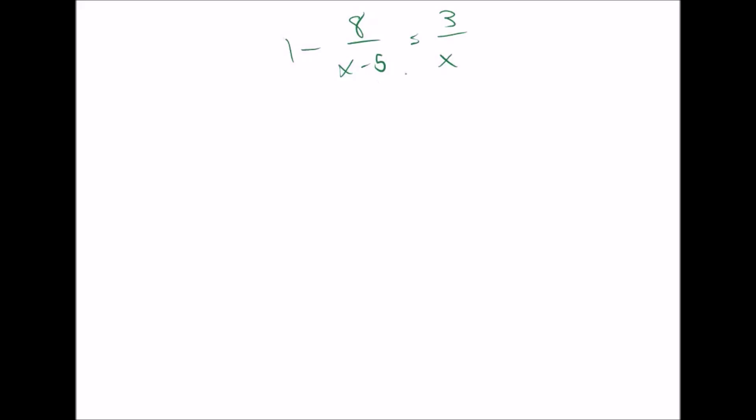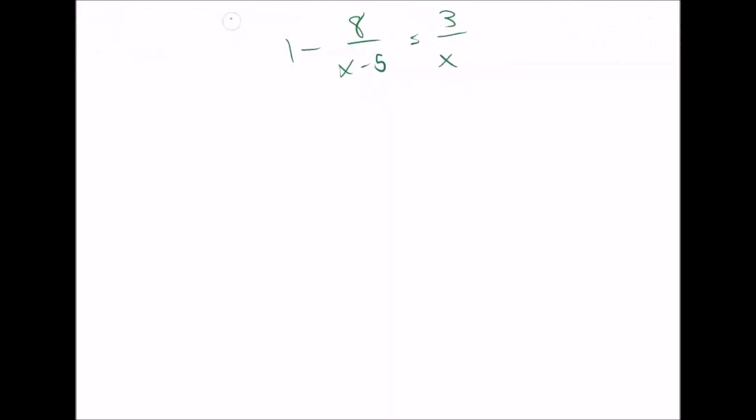So looking at this, you know the lowest common denominator will be x times x minus 5. Because some of the terms need x, some of them need x minus 5, and this one doesn't have either one. So that's going to need both x and x minus 5. So I'm going to go ahead and erase that and start multiplying each one times x and x minus 5.